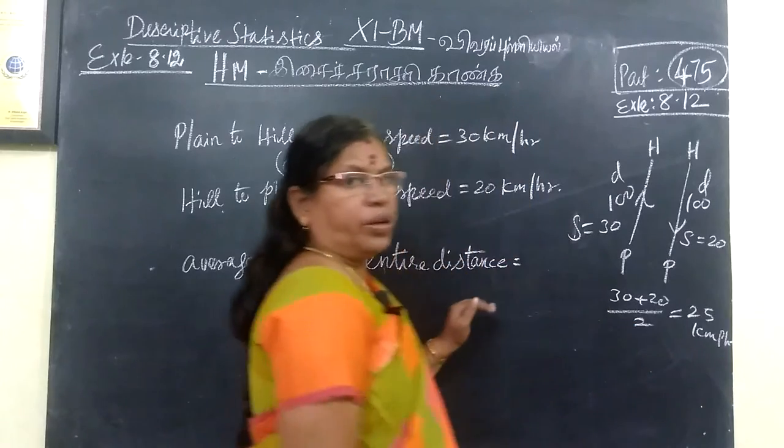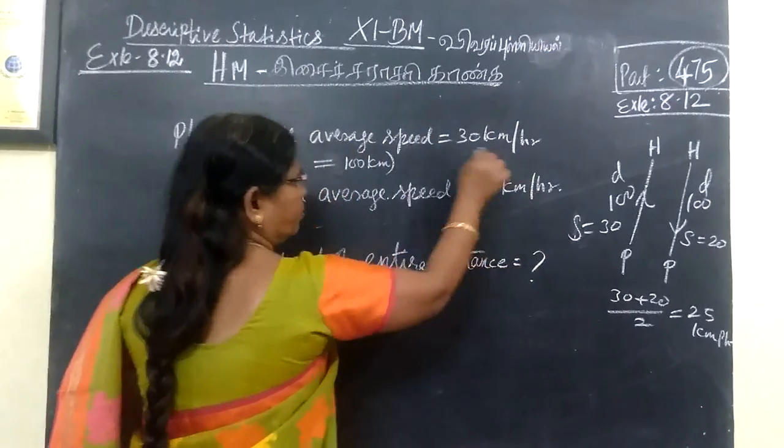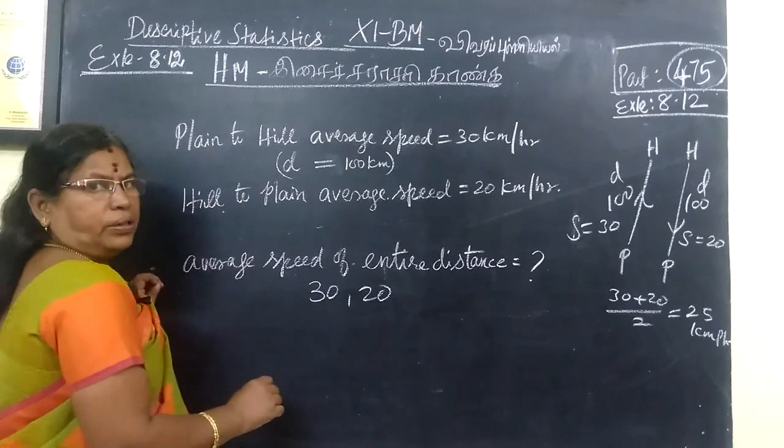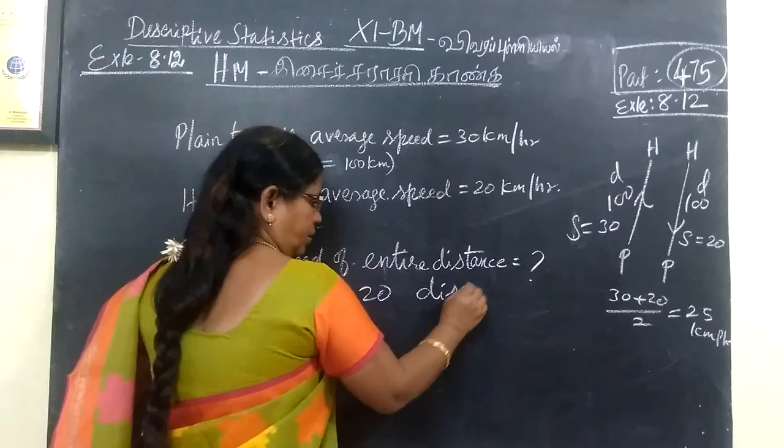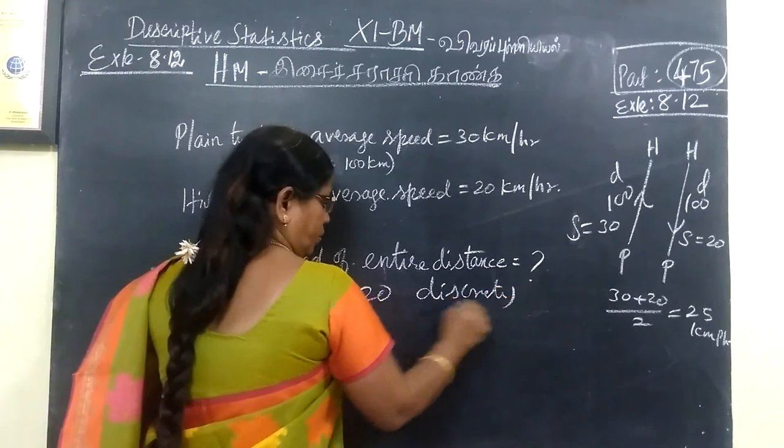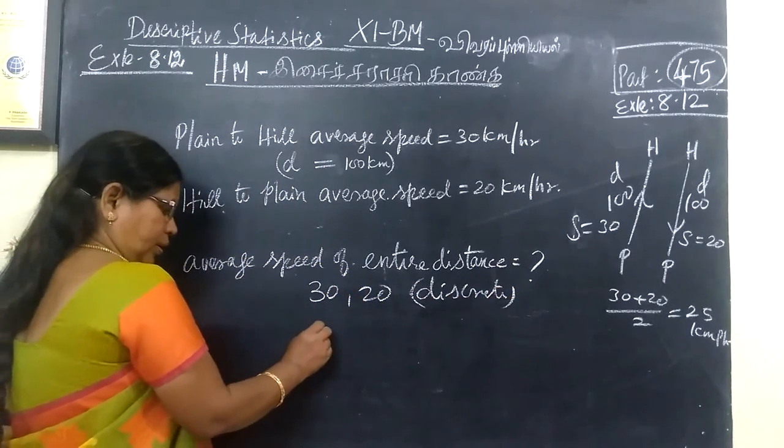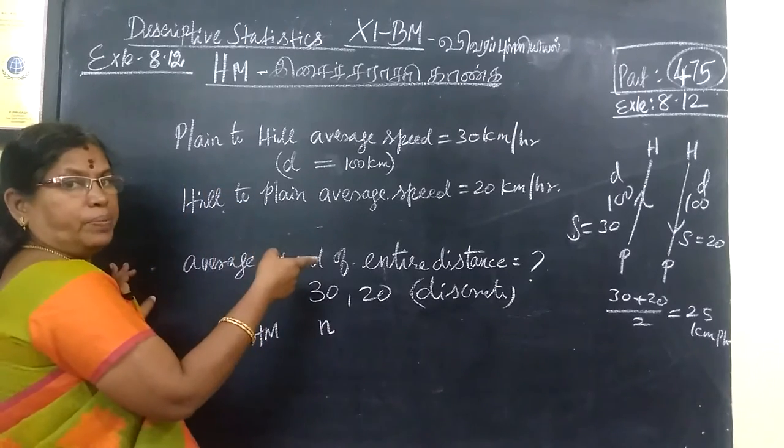Using harmonic mean, we are finding this. The number of observations is 30, 20. So x values are 30, 20. This is discrete data. The formula is N by harmonic mean: N by sigma 1 by x1 plus 1 by x2.